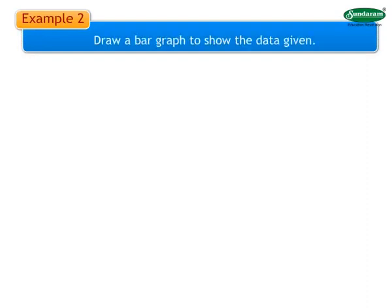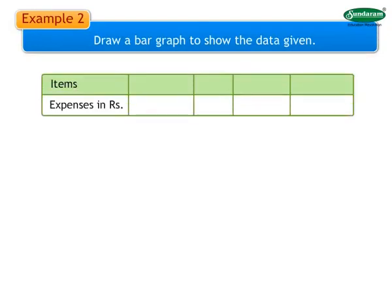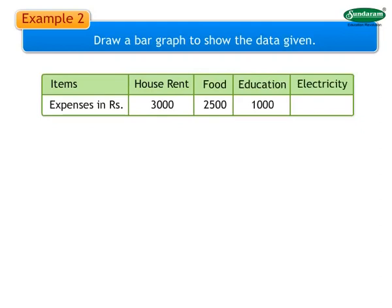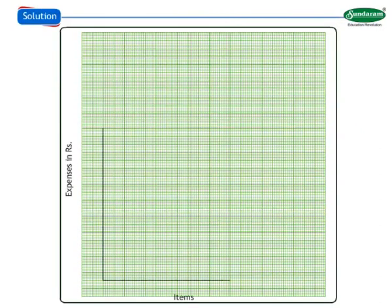Example 2: Draw a bar graph to show the data given. Monthly expenses of Sachin are given. Sachin paid Rs. 3000 as house rent. He spent Rs. 2500 on food, Rs. 1000 for education, and Rs. 400 for electricity.